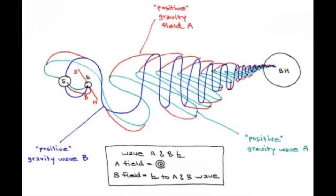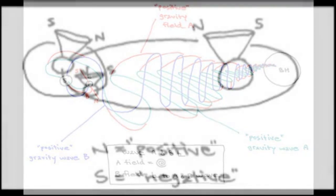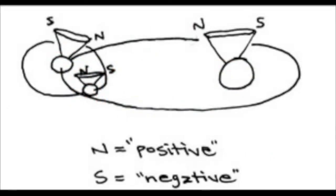In green and blue at right angles to one another, we see positive gravity waves A and B combining to form positive gravity field A in red. As the gravity waves emitted from the galactic core by the central black hole there pass through our star, the Sun, they result in occasional reversals of the solar electromagnetic poles. Just as wormholes form on the surface of black holes at the cores of spiral galaxies, so too does the sunspot cycle reflect the effect on the north and south oriented magnetic poles of the black hole and all its galaxy's stars.